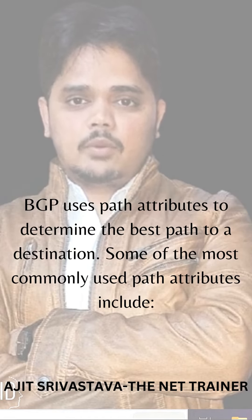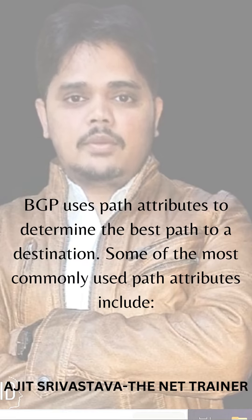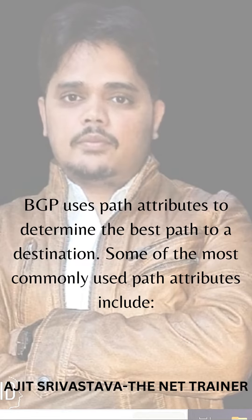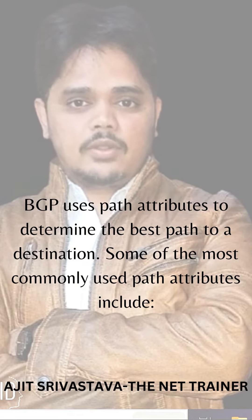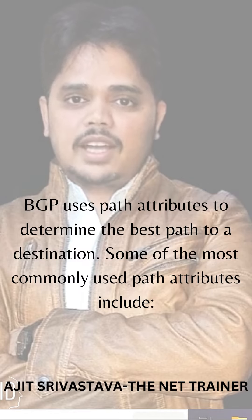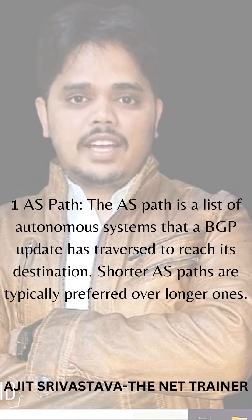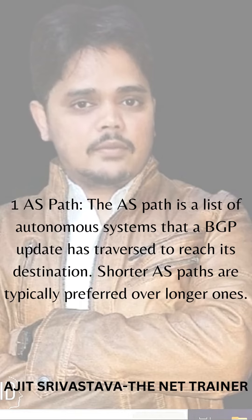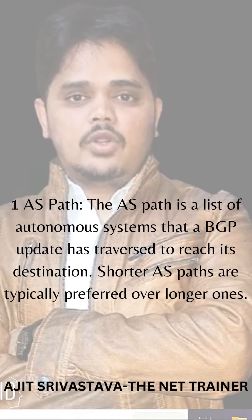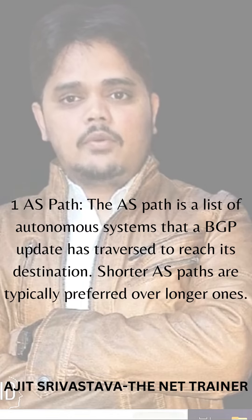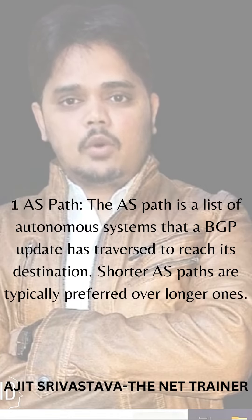BGP uses path attributes to determine the best path to a destination. Some of the most commonly used path attributes include AS path — the AS path is a list of autonomous systems that a BGP update has traversed to reach its destination. Shorter AS paths are typically preferred over longer ones.